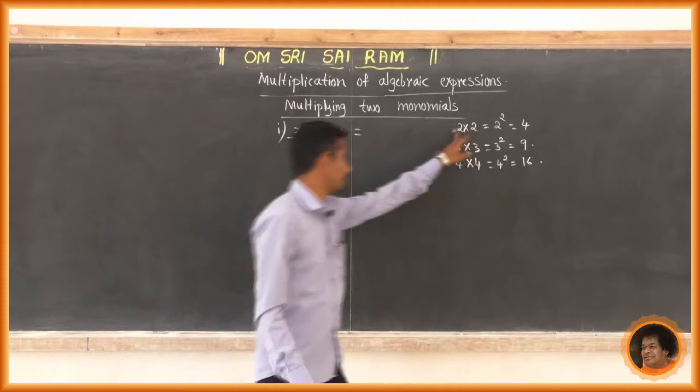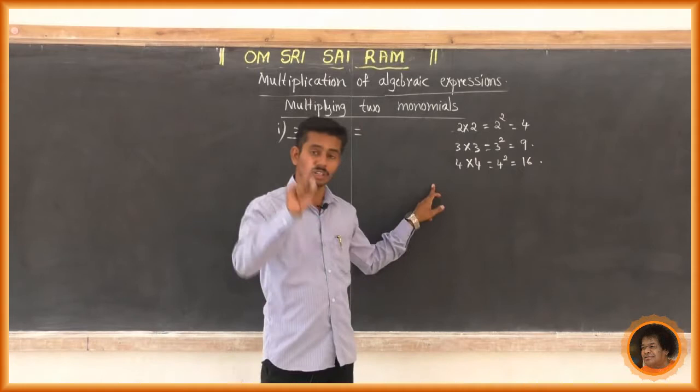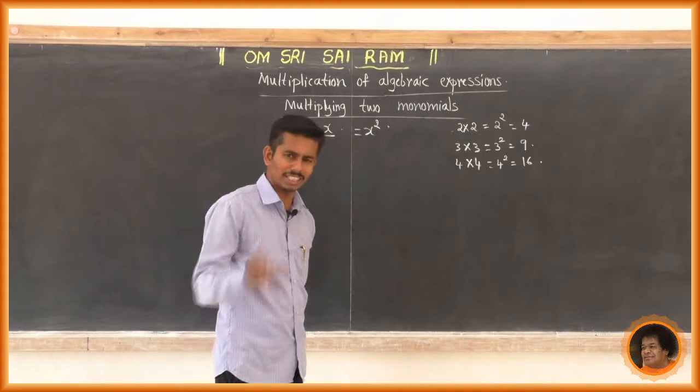If 2 into 2 is 2 squared, 3 into 3 is 3 squared, 4 into 4 is 4 squared — in the same way, x into x is x squared. So the product of x and x is x squared.